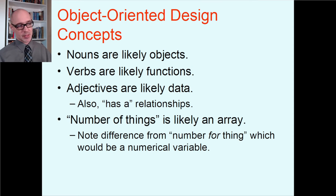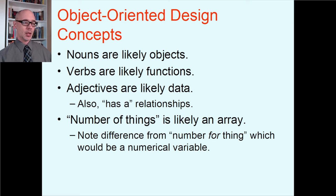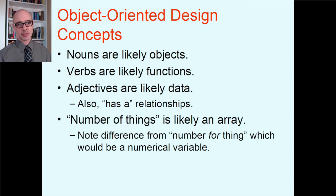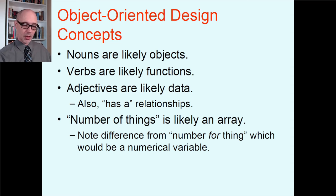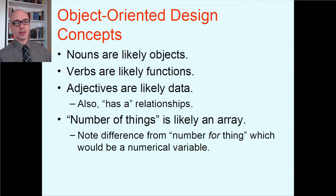Verbs are quite likely talking about functions — things that occur, things that objects do. I've been saying all along, ever since I introduced functions back in Chapter 7, that I prefer you name your functions as verb phrases, like get score or print results. Functions are stuff that objects do, so they're usually verbs in your descriptions. The adjectives of a description are quite likely the data — the member variables. Adjectives describe a noun and give it qualities, and that's what member data is for. Member data records things like length, width, size, or color.